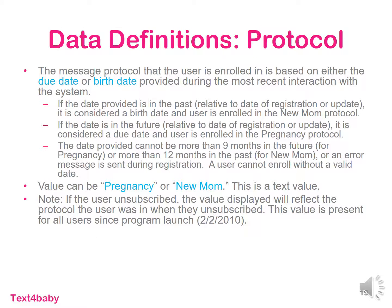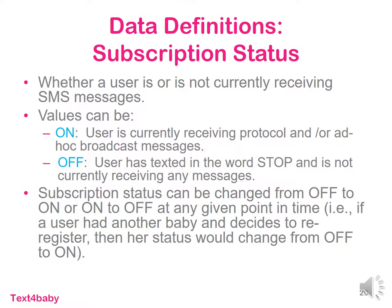Protocol represents the type of messages that a user is receiving. When participants sign up for the program, they have to enter either a due date or a birth date into the Text for Baby system, and this date determines if they're going to receive new mom or pregnancy messaging. Keep in mind that if a user unsubscribes, the value displayed for protocol will reflect their messaging type at the time they cancel the service. The subscription status indicates whether a participant is eligible to be receiving Text for Baby messaging. If they have signed up and are still enrolled, their subscription status will display as on. However, if they cancel the service and have texted in the word stop, they will stop receiving all messaging and their subscription status will be changed to off. As mentioned earlier, this value can change over time in the data set.